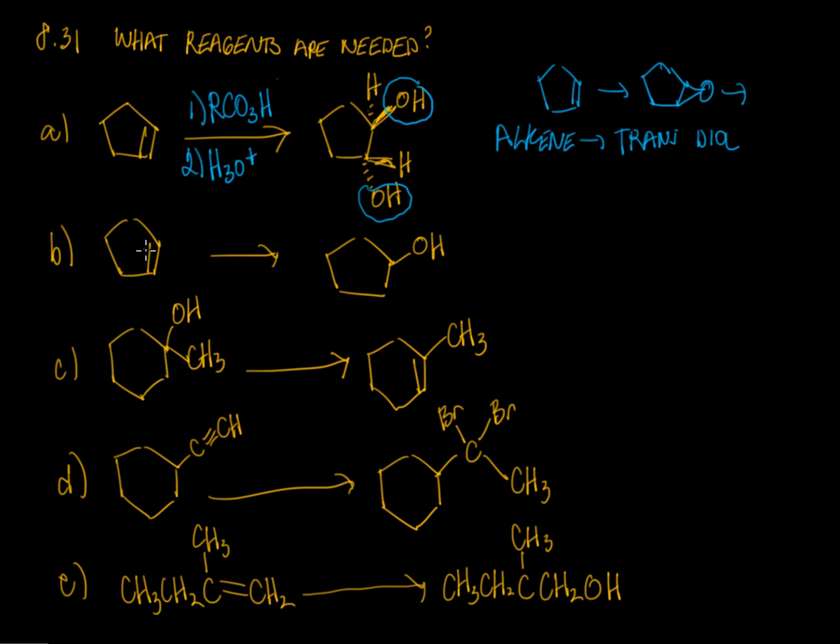In this next problem, we have an alkene just going to an alcohol. There's just one OH here. So what we need to use here is H3O+. Water and acid together will hydrate the alkene. This is a hydration. So this is an alkene to an alcohol. So become familiar with your functional groups and what reagents will react with those functional groups.